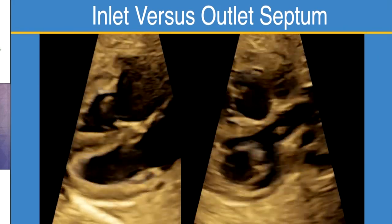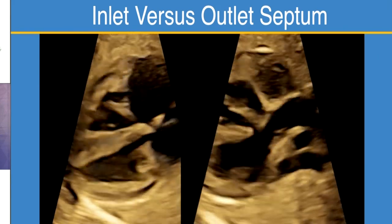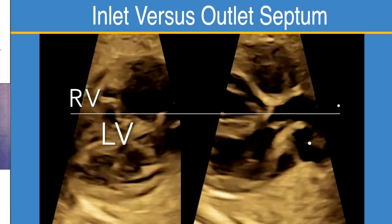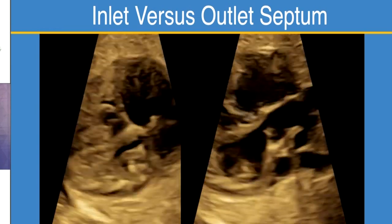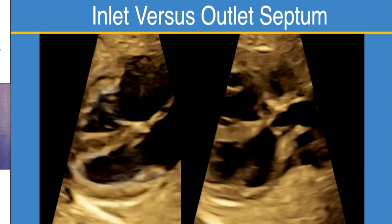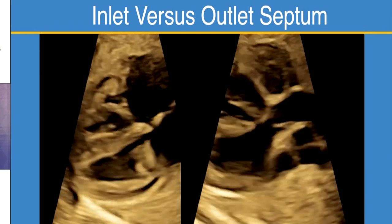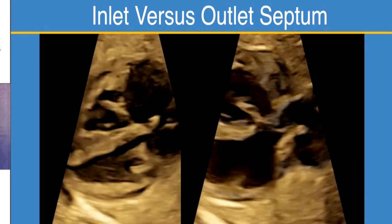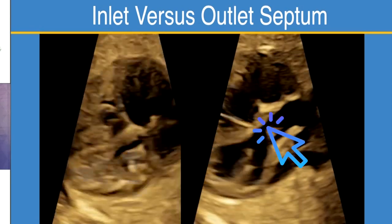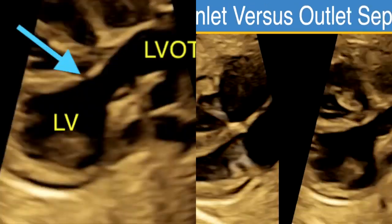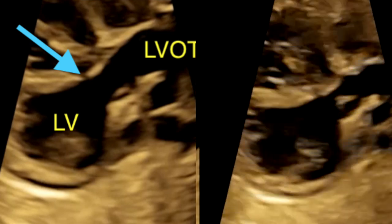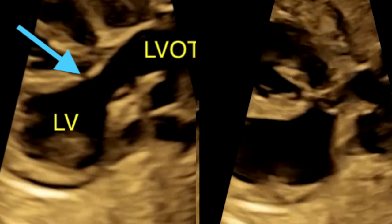To make sure everyone is aware: this is the four-chamber view portion of the ventricular septum. The inlet septum is here — you can see the mitral and tricuspid valves being offset — and this is the atrioventricular septum, with the rest being muscular septum. This other view shows the outlet septum because we see the aortic valve, and here you can see a small VSD in the membranous septum. That is not really a four-chamber view abnormality — it belongs to the outlet septum.